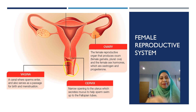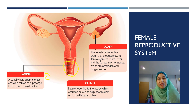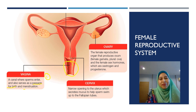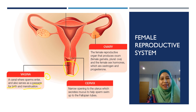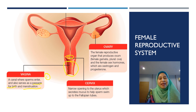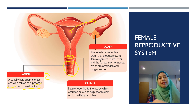The vagina is a canal where sperm enter — that is the first function. The vagina also serves as a passage for birth, and it is also the passage for menstruation. Next is the cervix, which is a narrow opening to the uterus. The cervix secretes mucus to help the sperm swim up to the fallopian tube.